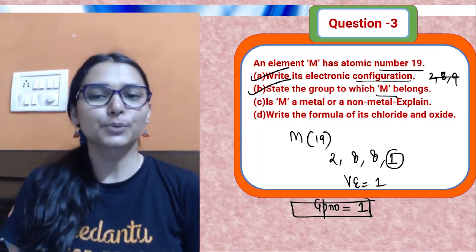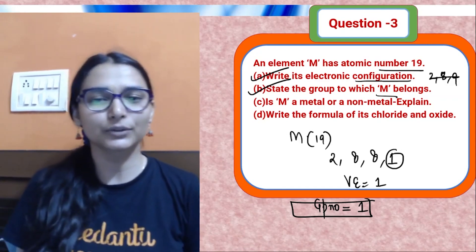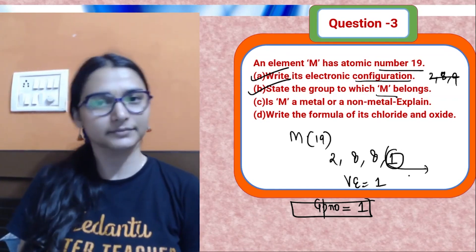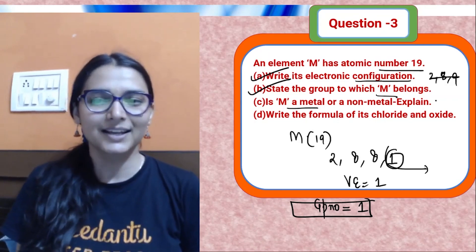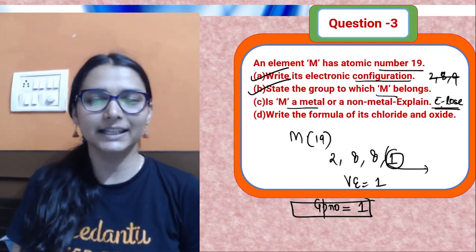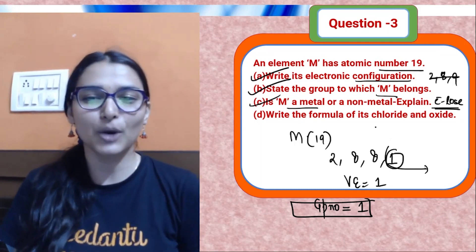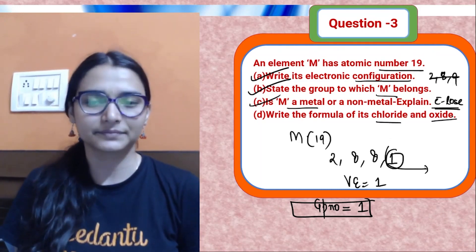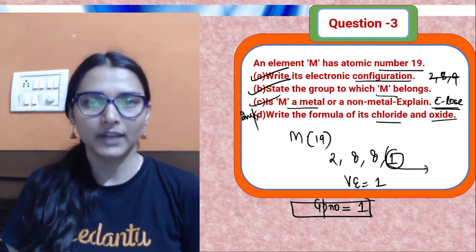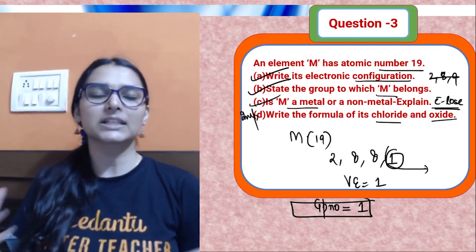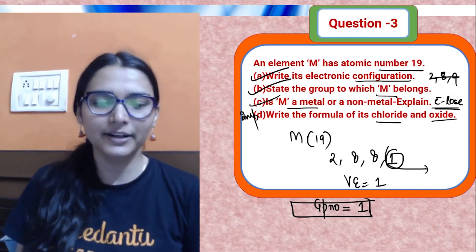Is M a metal or non-metal? M has one valence electron. It will lose that one electron very quickly — electron donors are metals. So M is a metal. Next, write the formula of the chloride and oxide of M. Whenever a formula is asked for a chloride, oxide, or sulfide, think about the valence of the element and use the criss-cross method from Class 9.